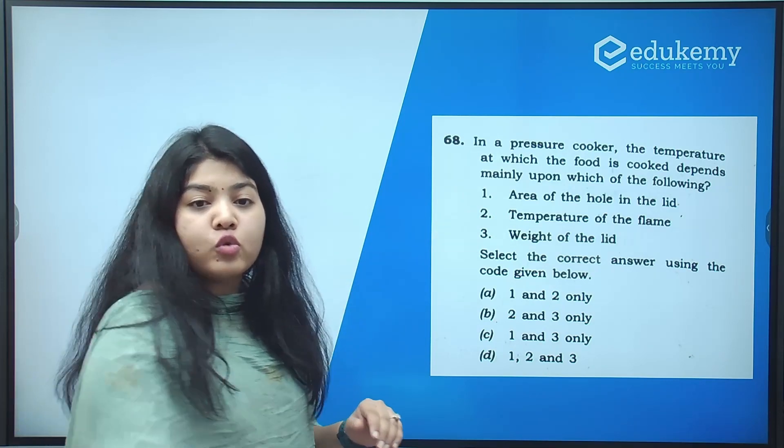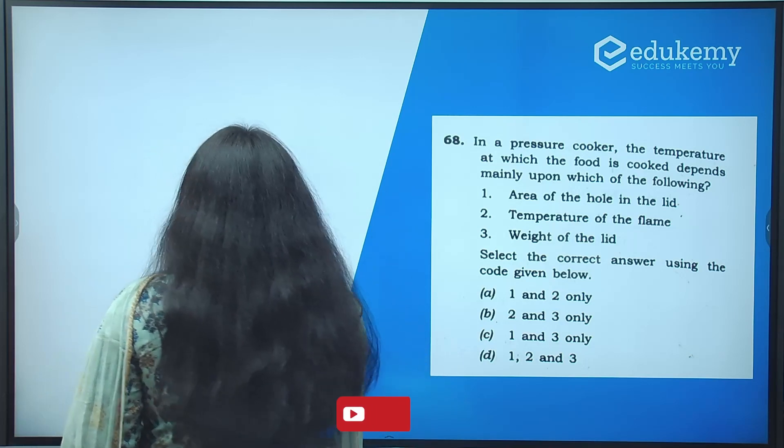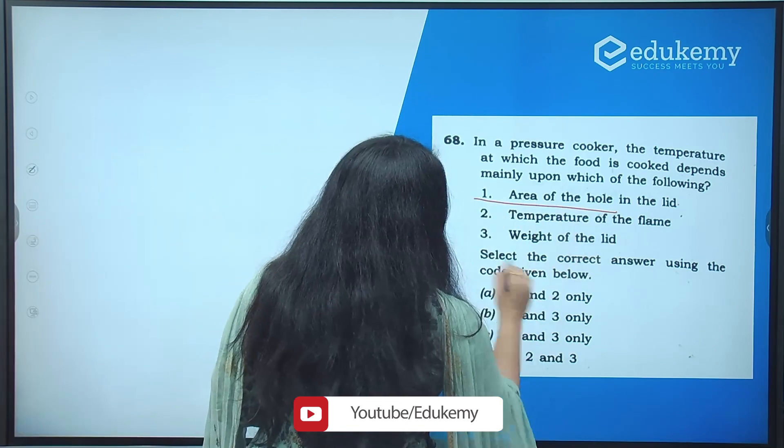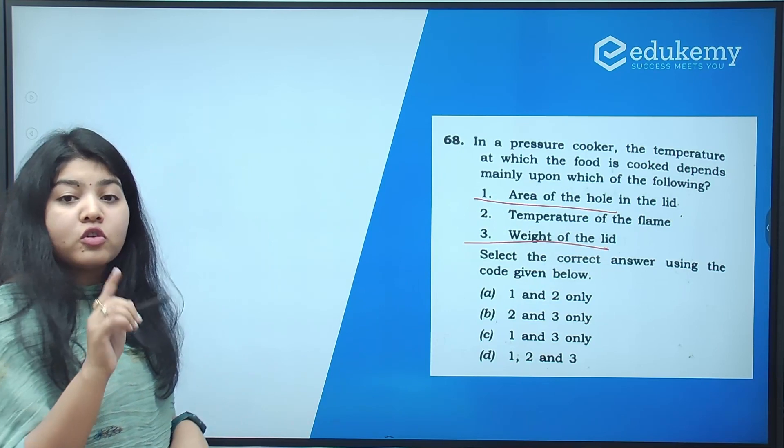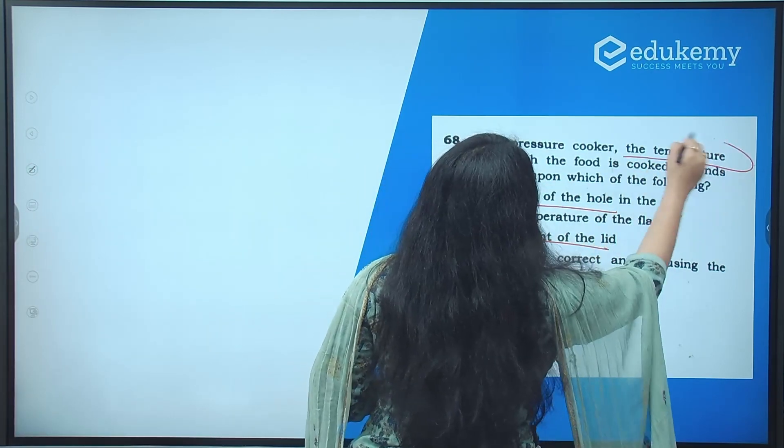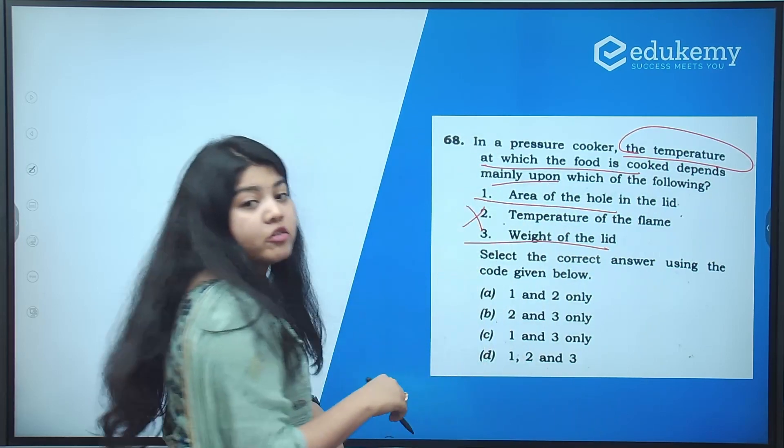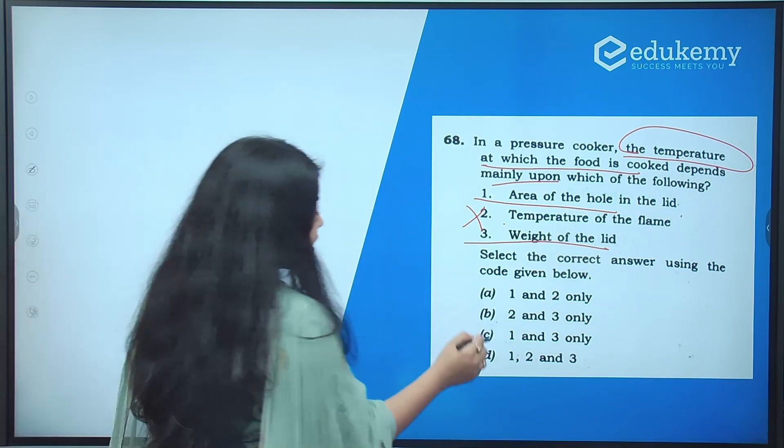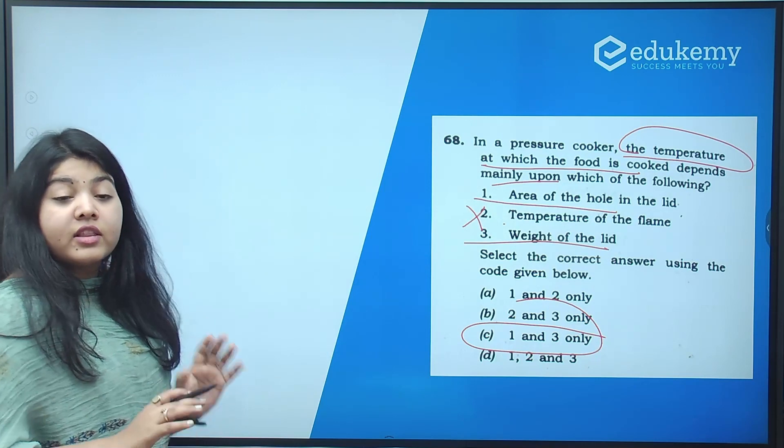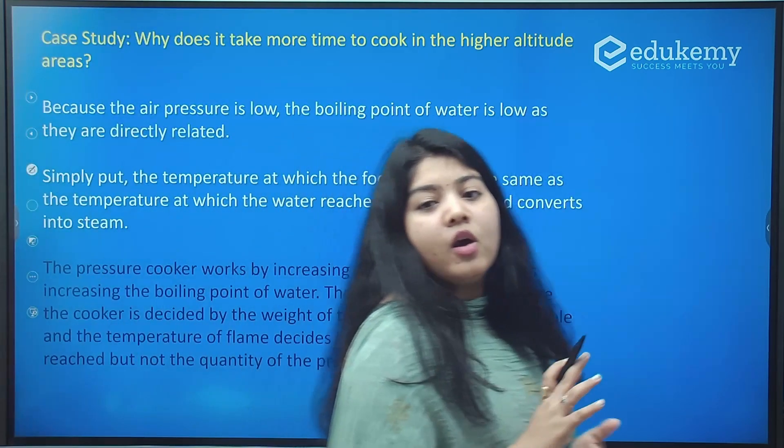So a lot of students found it very difficult to digest when we said that it is the area of the hole and the weight of the lid which are responsible for determining the temperature at which the food is cooked, and it is not the temperature of the flame which is the determining factor. And we gave 1 and 3 as the answer. Now without even telling whether it is right or wrong, I simply want to give you a case study so that you can get an idea why we came to this conclusion.